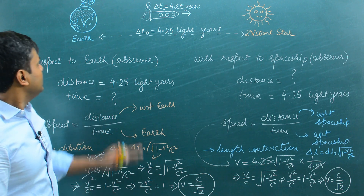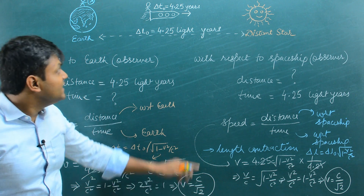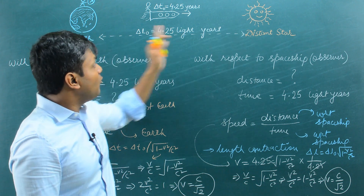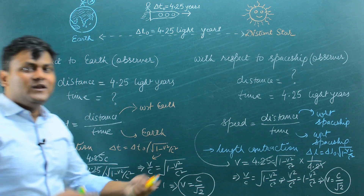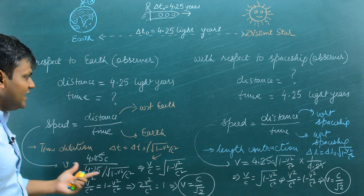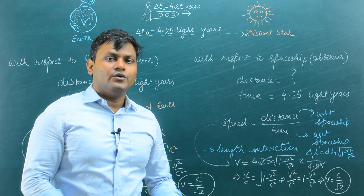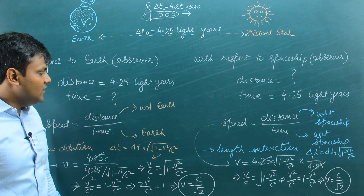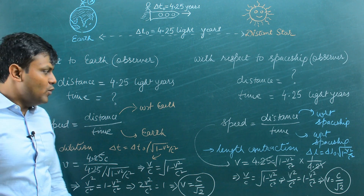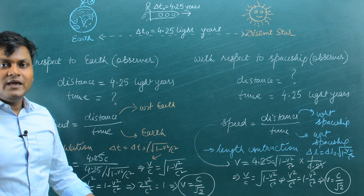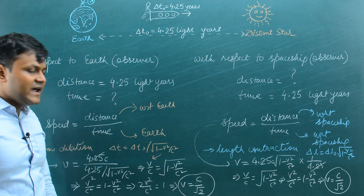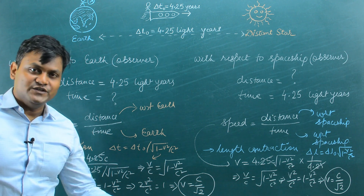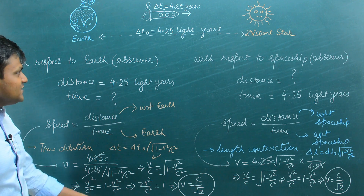In both situations — for an observer on Earth and for an observer inside the spaceship — the speed of the spaceship is C/√2. But the phenomena they experience are time dilation and length contraction respectively. I hope this video makes it clear when to apply time dilation and when to apply length contraction. Both may arise in a particular situation, but with respect to two distinct observers. This was an interesting question.